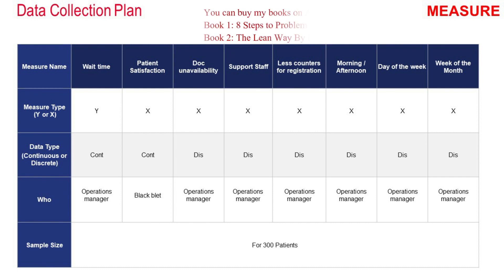After the brainstorming session, they identified potential X's and created a data collection plan. The project Y was continuous — OPD wait time. Patient satisfaction survey score was a continuous X. Doctors' unavailability is a discrete X — doctors available or not. Support staff availability is also discrete. Less counters for registration is a discrete X, with number of counters open ranging from 1 to 6. Morning or afternoon OPD, day of the week, and week of the month are all discrete X's. Data was collected to test these X's against Y in Minitab.